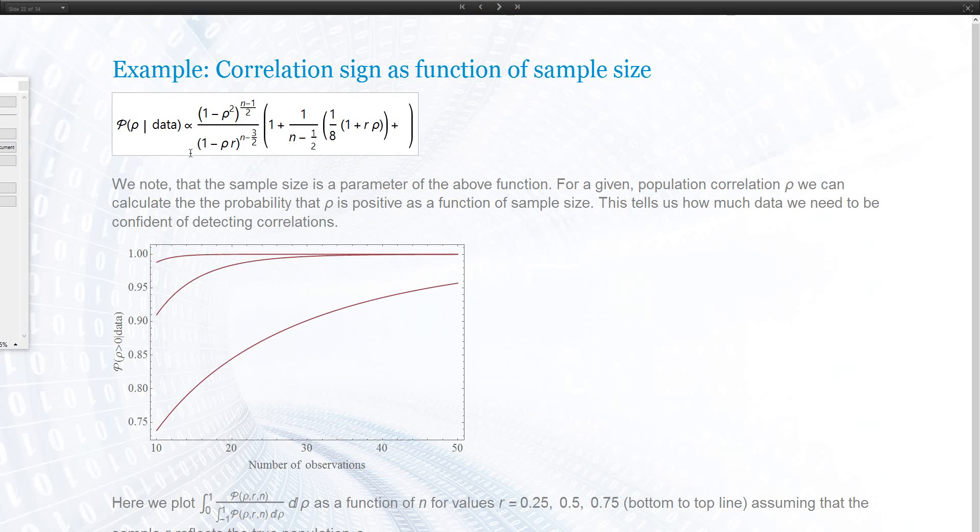Since in this formula the sample size is also a parameter, we can also turn around the computation and ask for a given population correlation coefficient how large needs our sample to be in order to result in a 95% level of significance or something.